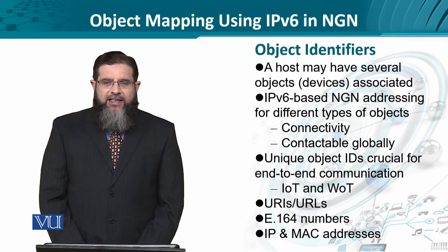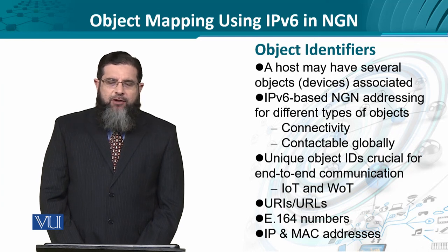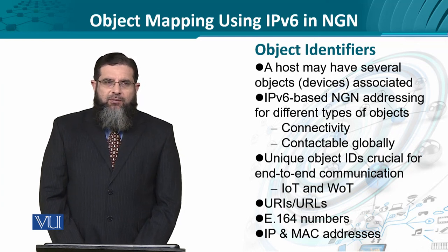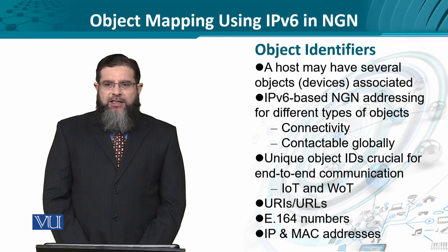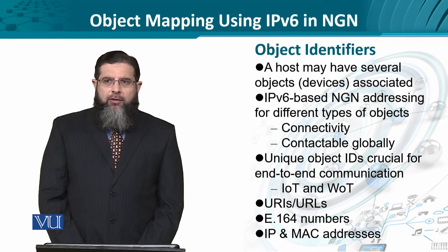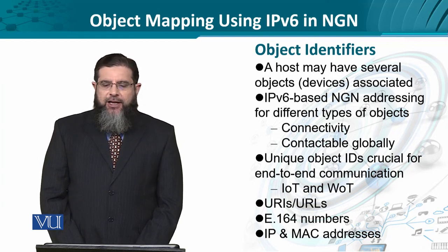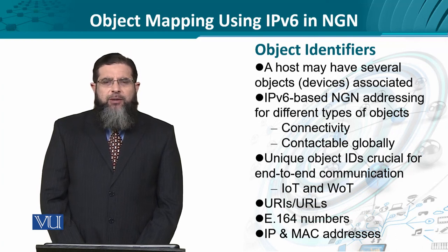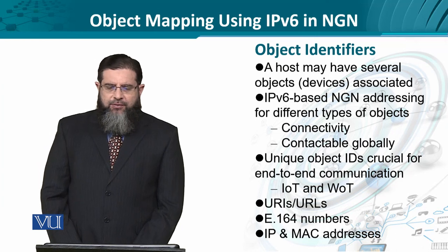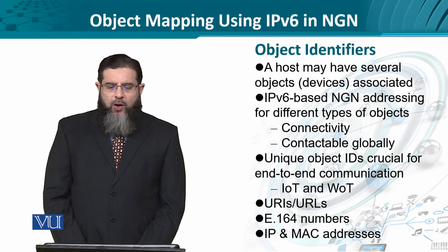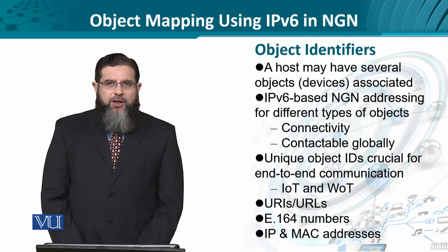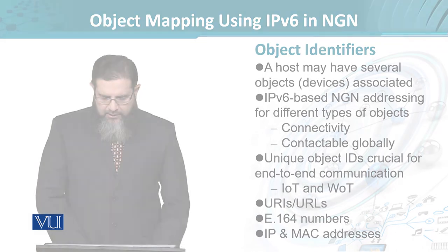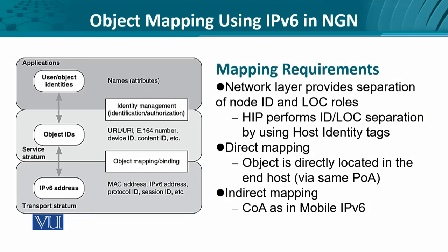In Internet of Things and Web of Things, each entity as small as a Fitbit or perhaps a user app needs to have an identity. We start off with very basic concepts of identifiers like URLs, URIs, the E.164 numbering scheme, and the classical IP and MAC addressing. Let's now look at the mapping requirements.